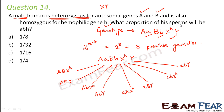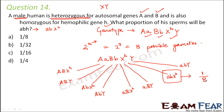We need to find what proportion of sperms would be ABH. ABH is the same as AB X^H. Looking at all 8 possible gametes, AB X^H appears once. So the proportion is 1 out of 8, meaning one-eighth of the sperms would be ABH. Therefore, option A is the correct answer.